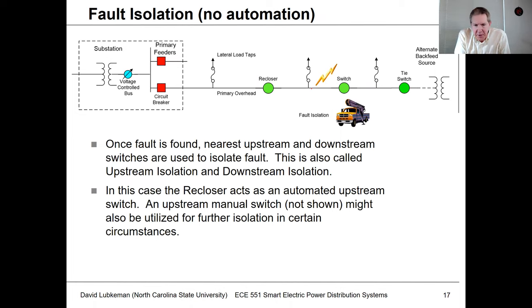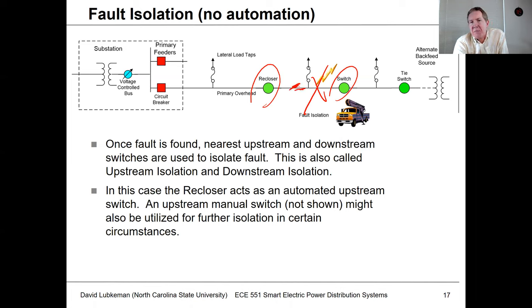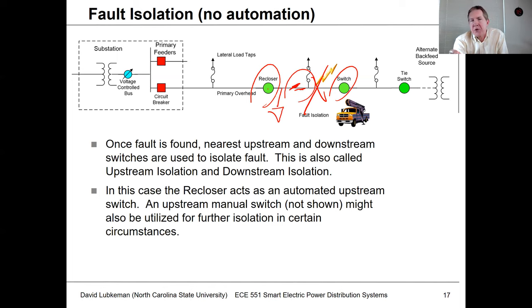For fault isolation — once I know where the fault is, say within a section, I'd at least have to have the upstream switch open. If I have a recloser, that happens automatically. If I'm going to be back feeding, I also need to operate a downstream switch. I might have other manual switches I'd want to use as well — for example, opening a manual upstream switch so I can close in the recloser to get a few more loads back online. The goal is to make the fault section as small as possible.